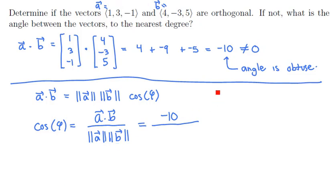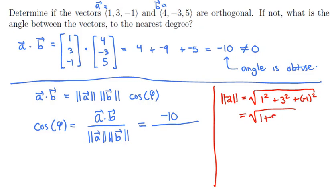We'll get a little bit of scratch work here and compute the length of A. The length of A, or its magnitude, is the square root of the sum of the squares of its components. So 1 squared plus 3 squared plus minus 1 squared. That gives us the square root of 1 plus 9 plus 1, or the square root of 11.